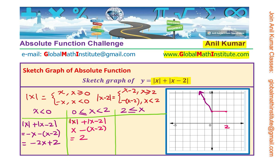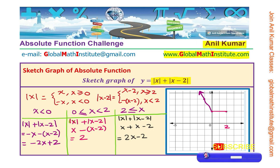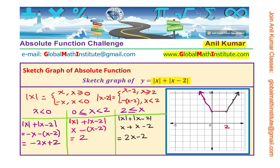Now let us consider the third region where x is greater than 2. Both expressions are positive, so absolute value of x plus absolute value of x minus 2 equals x plus x minus 2, which is 2x minus 2. At x equals 2, y equals 0; at x equals 3, y equals 4. So the graph goes upward to the right on this side.